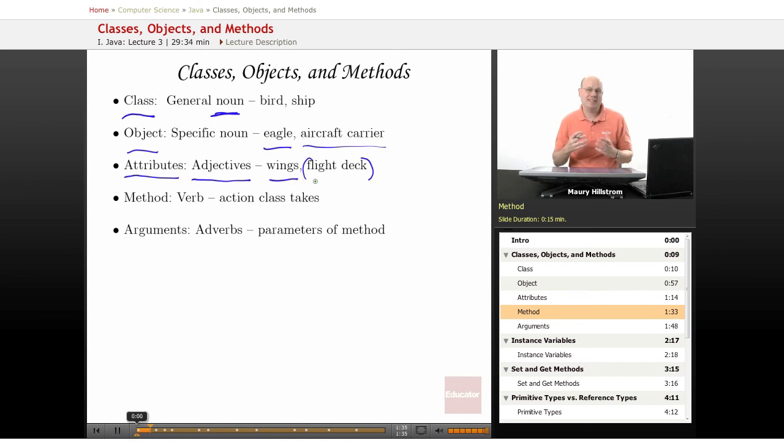Then we want to know what does that object do or what can it do. Then we need these methods. A method is like a verb, the action that the class takes, or the action that the object takes, or what it does, or what task it performs, or what we want it to do within the program.